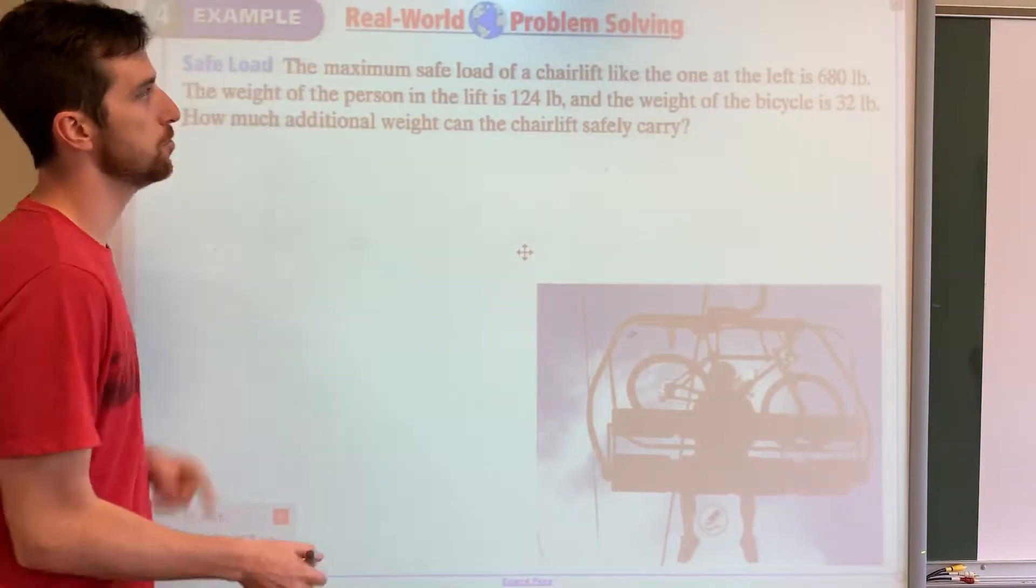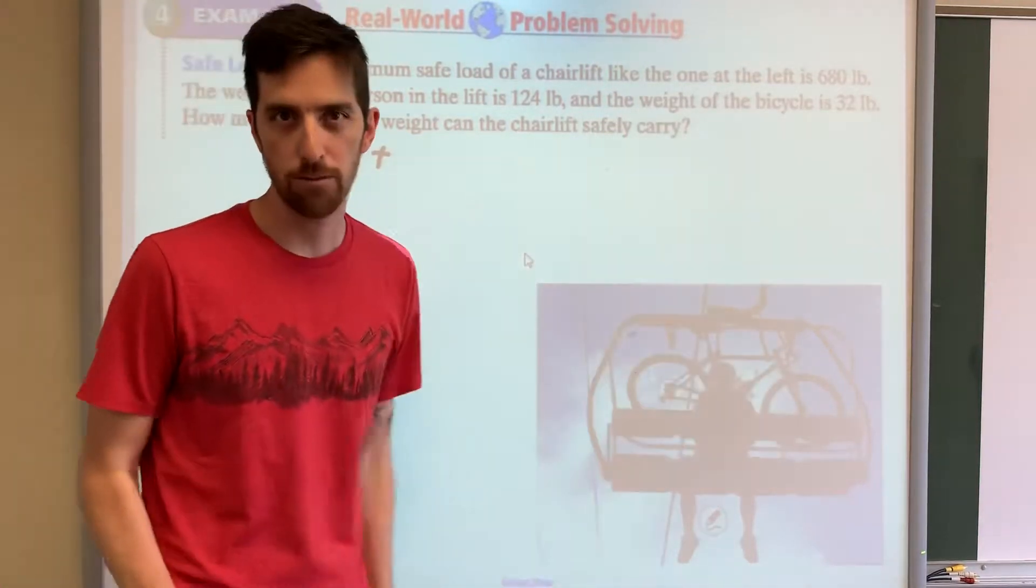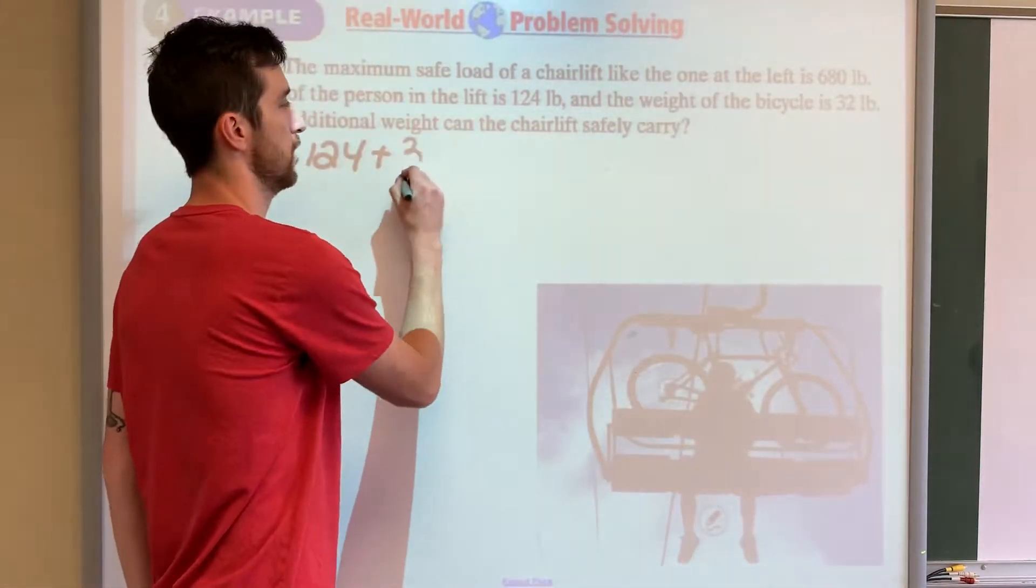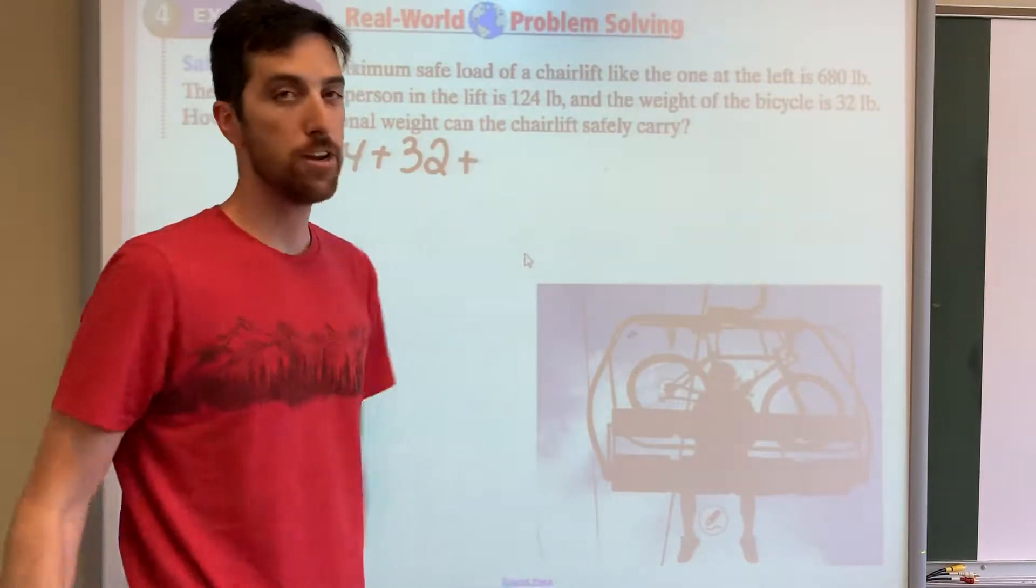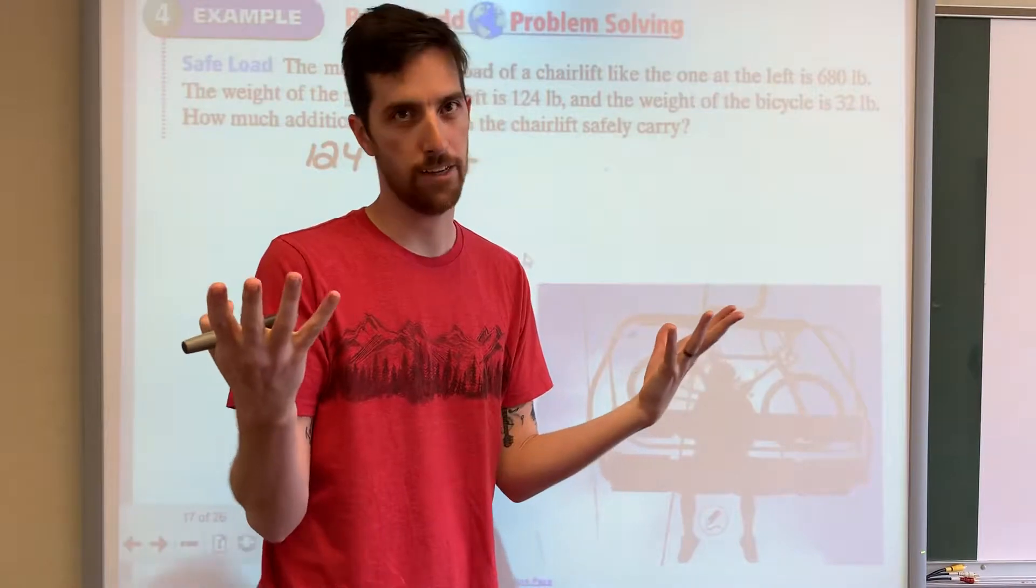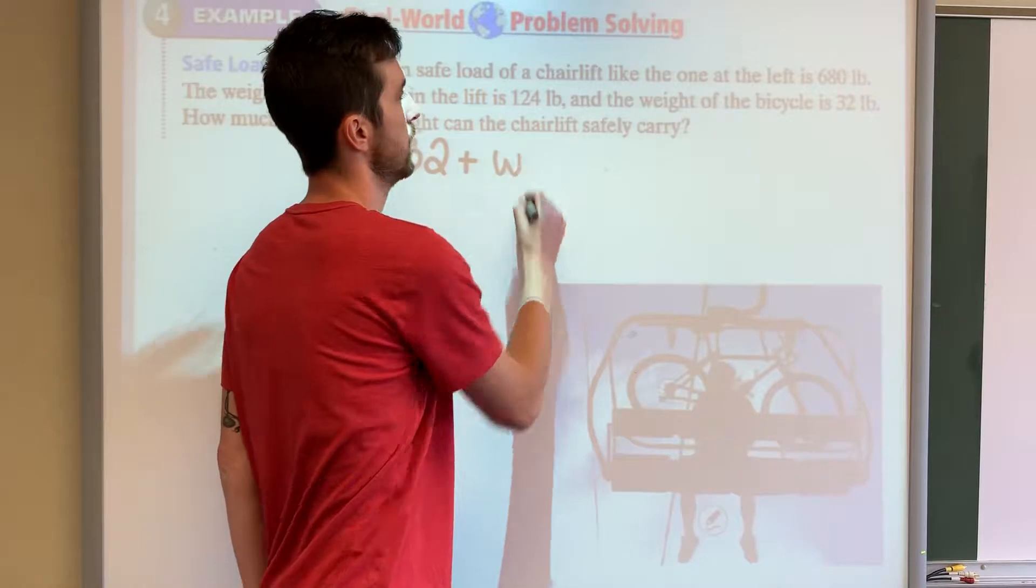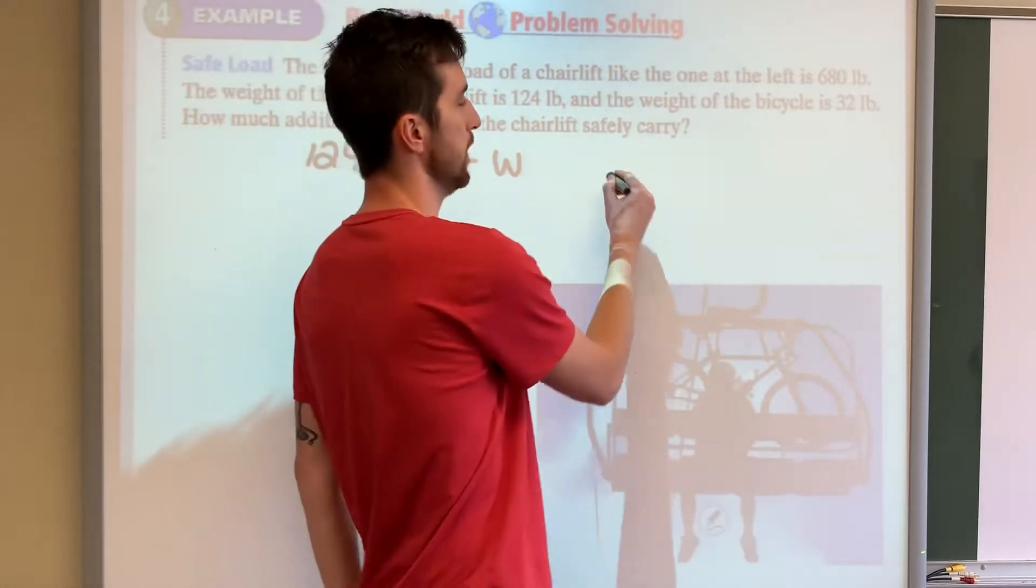So we got this human that is 124 pounds. We're going to add the weight of the bike, which is 32 pounds, plus they want to know the unknown, how much more weight can they hold. Let's call it W. This thing can hold 680 pounds.